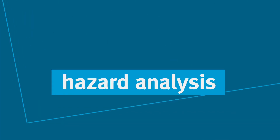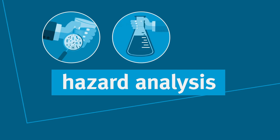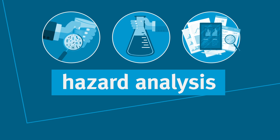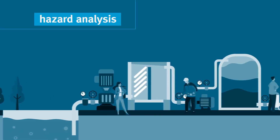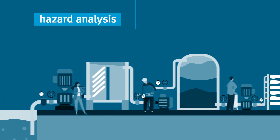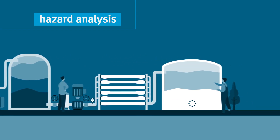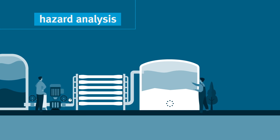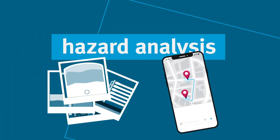For the hazard analysis, it is also important to consider the microbiological and chemical quality of the raw water and drinking water, and to review operational records. A site visit and inspection of the entire drinking water supply system by the WSP team is essential to the hazard analysis. Photographs and GPS data will assist in later documentation.